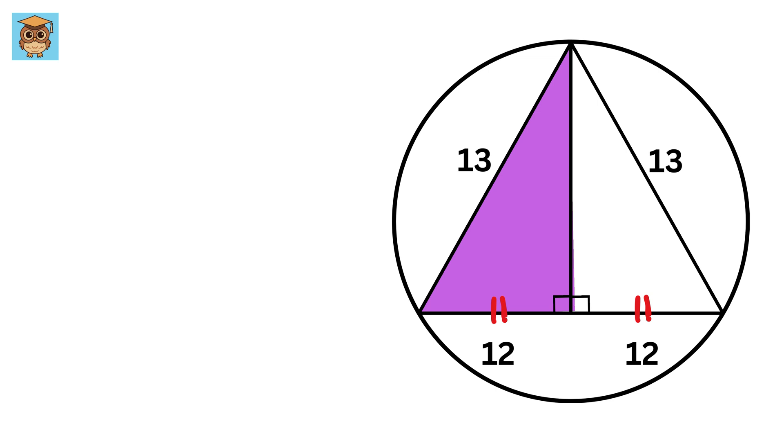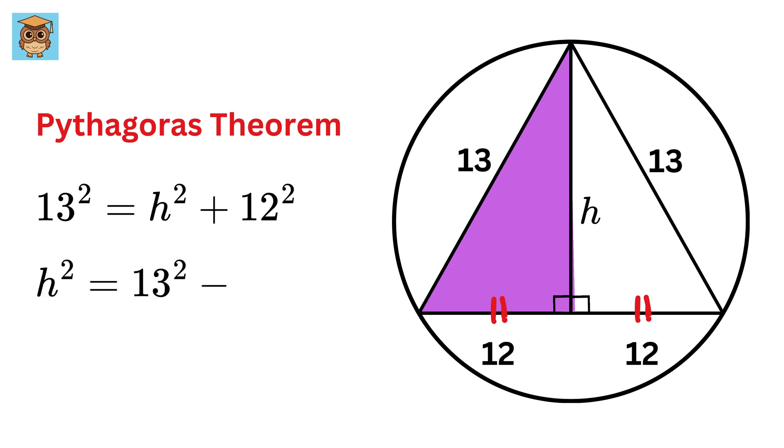Next, consider this right triangle. We will use Pythagorean theorem to find the length of this perpendicular line. Let us label it as h. We get 13 square equals h square plus 12 square, so h square equals 13 square minus 12 square or 169 minus 144 or 25, so h equals root 25 or 5.